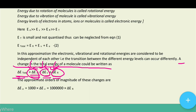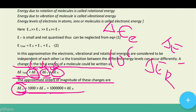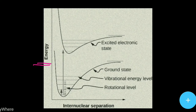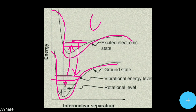The approximate orders of magnitude of these changes are: ΔE_electronic = 1000 × ΔE_vibrational, and ΔE_electronic = 10^6 × ΔE_rotational. A figure is shown with energy plotted against internuclear separation, displaying curve-type and line-type energy levels. Transitions between these levels — whether electronic (between curves) or vibrational/rotational (between lines) — are independent of each other, as described by the Born-Oppenheimer approximation.